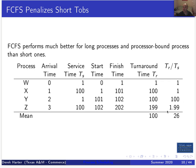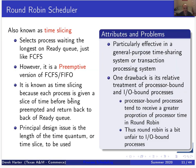That's why turnaround ratio is a more important performance measure than just wait time. A wait time of 100 isn't as significant if your process runs for 100 time steps, but a wait time of 100 is very significant if your process only needs one time unit to run.